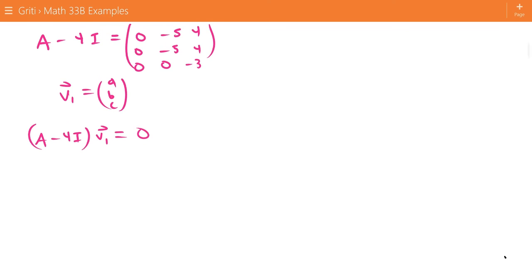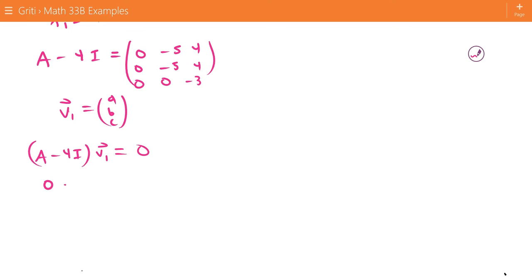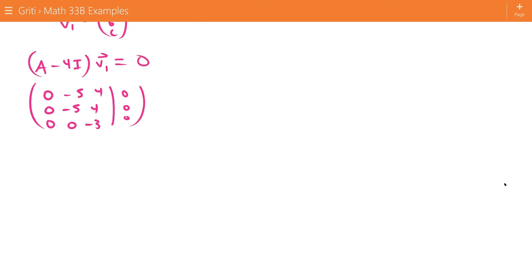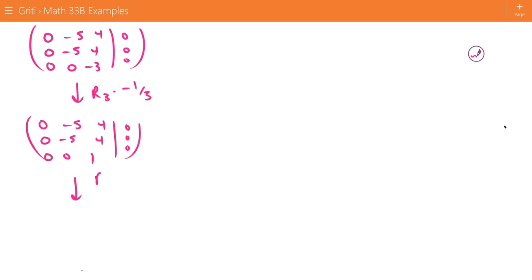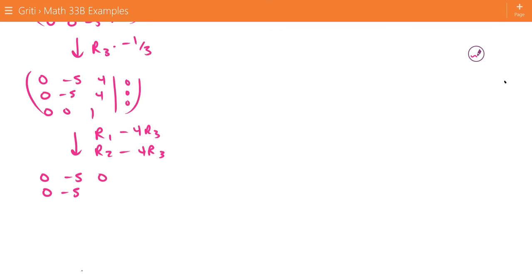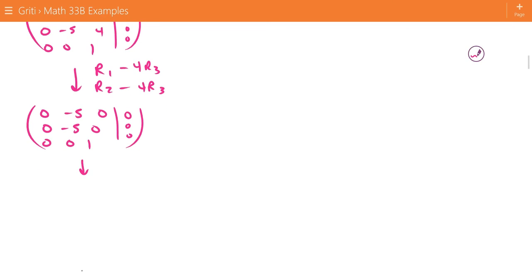such that A minus 4I times V1 equals 0. So V1 is in the null space of A minus 4I. And that reduces to the augmented matrix that we have here. If we take row 1 and subtract, if we actually divide row 3 by negative 3, and then we take row 1 and subtract 4 times row 3, and we also do the same for row 2, we'll get 0, negative 5, 0, 0, negative 5, 0, and 0, 0, 1.